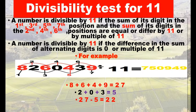For example, 8,260,439 divided by 11 equals 750,949. We look at positions 1, 3, 5, and 7 and add those digits: 8 plus 6 plus 4 plus 9 equals 27. Then we add the digits in positions 2, 4, and 6: 2 plus 0 plus 3 equals 5. Taking 27 minus 5 gives us 22. Since 22 is a multiple of 11, this number is divisible by 11.